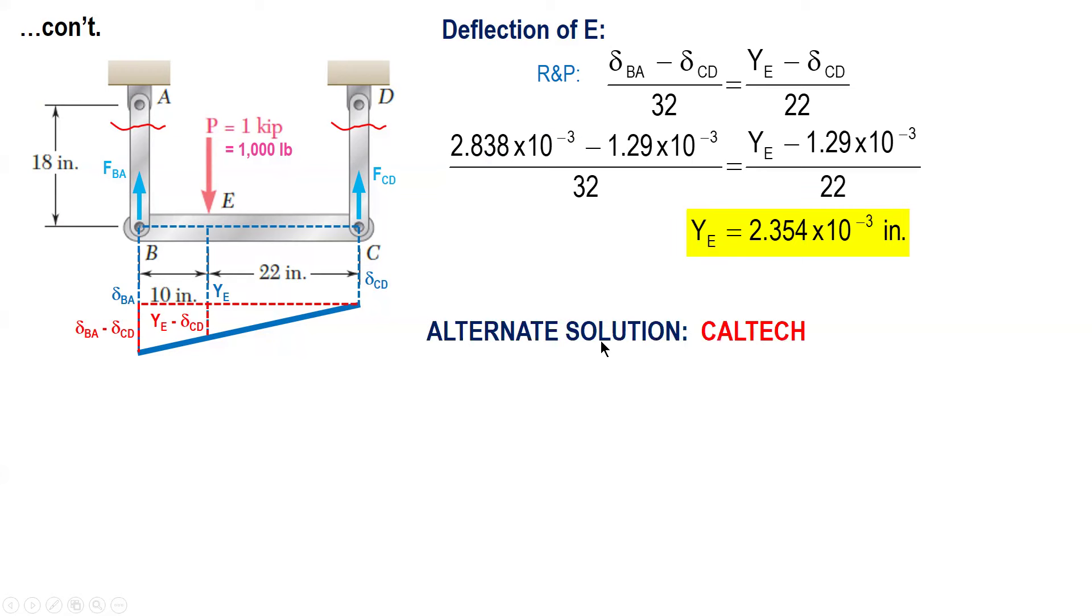Now if you want an alternate solution using calculator, you can use either Casio or Canon. So you go to mode, and linear function Y equals A plus BX. So mode 3-2.